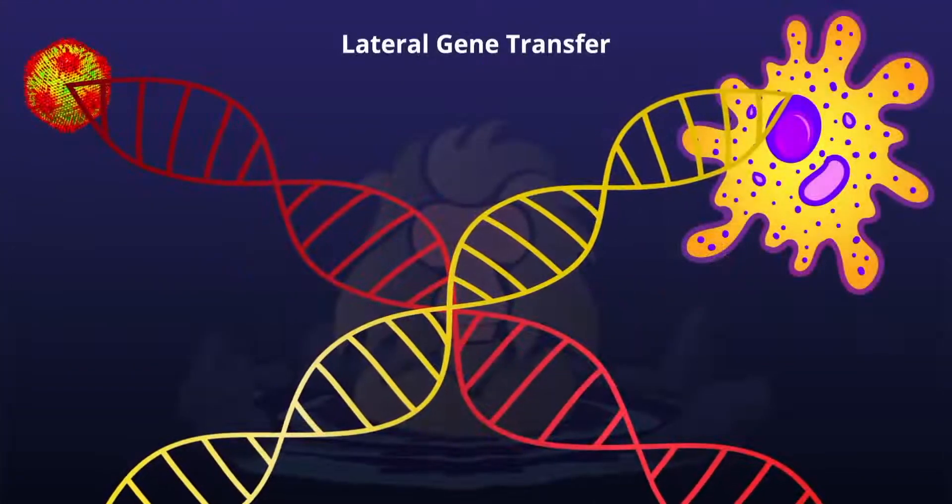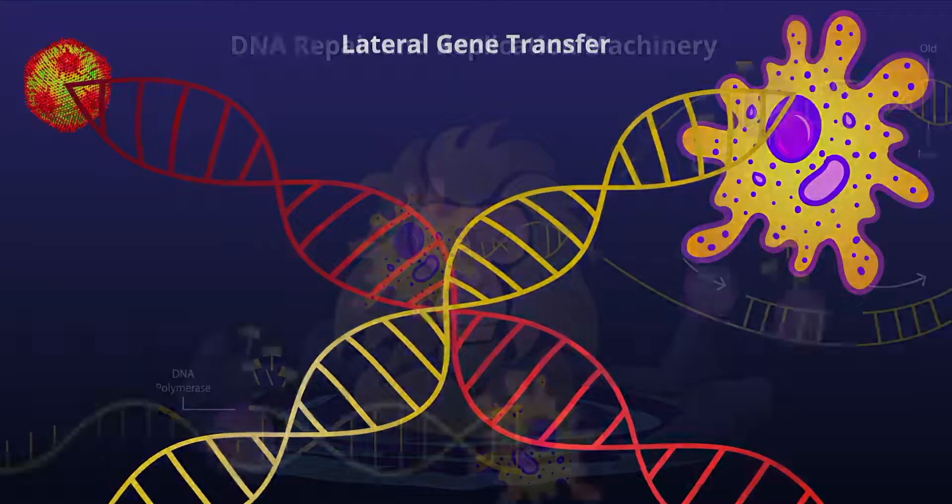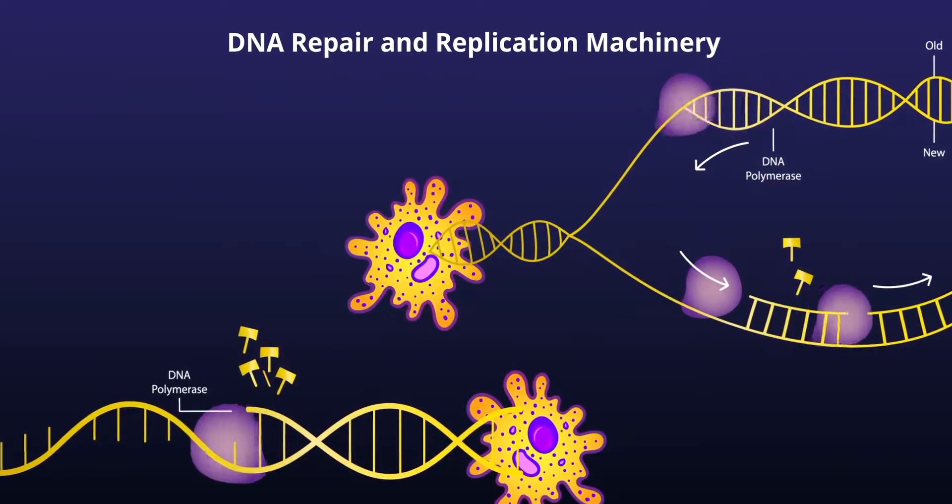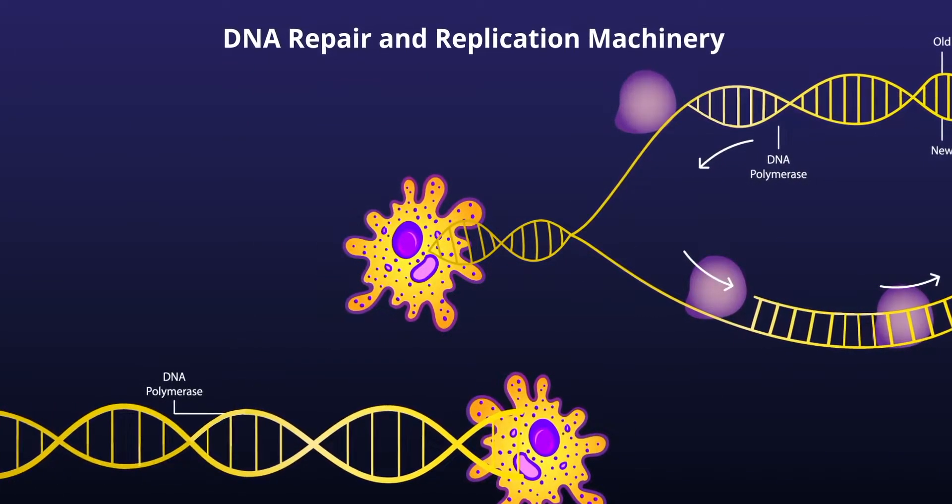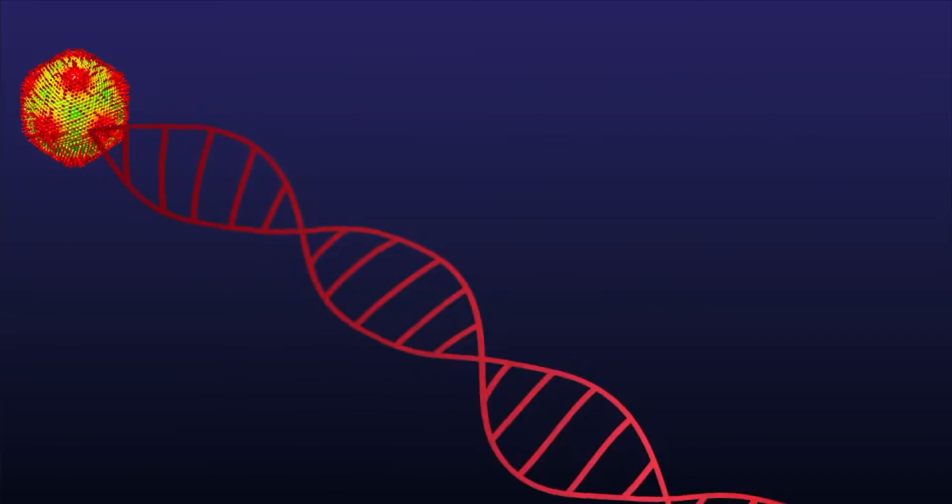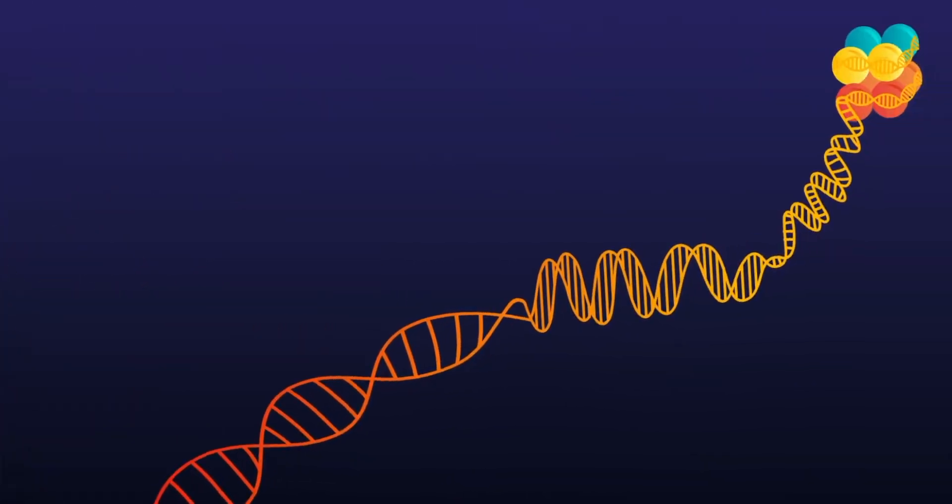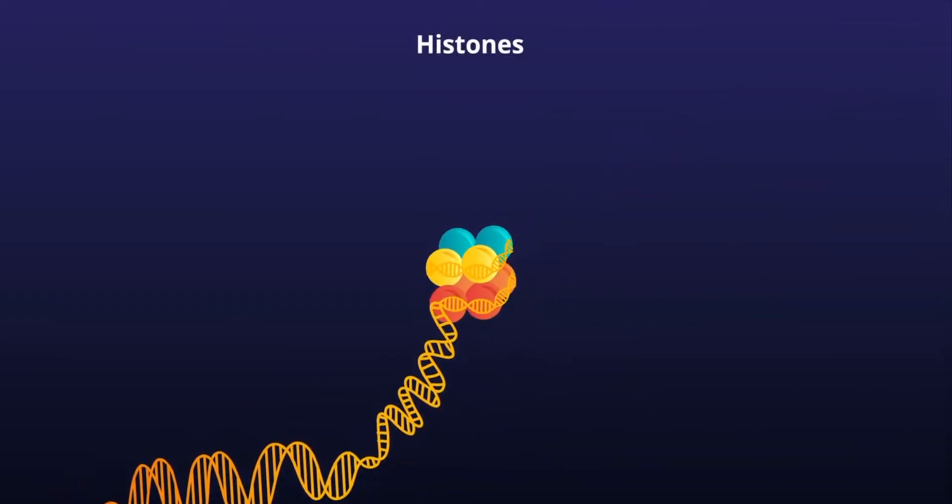Scientists think that it is through the same LGT mechanism that eukaryotic cells acquired their DNA replication machinery. The Medusa virus, unlike most viruses, contains genes that encode for a full set of proteins involved in DNA transaction, named histones.